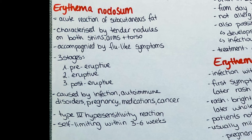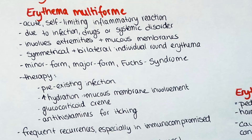It usually does not require treatment, as it is self-limiting with a normal duration of 3 to 6 weeks. The next form of erythema is erythema multiforme. It is also an acute, self-limiting inflammatory reaction and is usually due to infections of bacterial, fungal, parasitic or viral origin, as well as drug reactions, most commonly to penicillin, anticonvulsants like phenytoin and barbiturates, aspirin, modafinil and allopurinol.